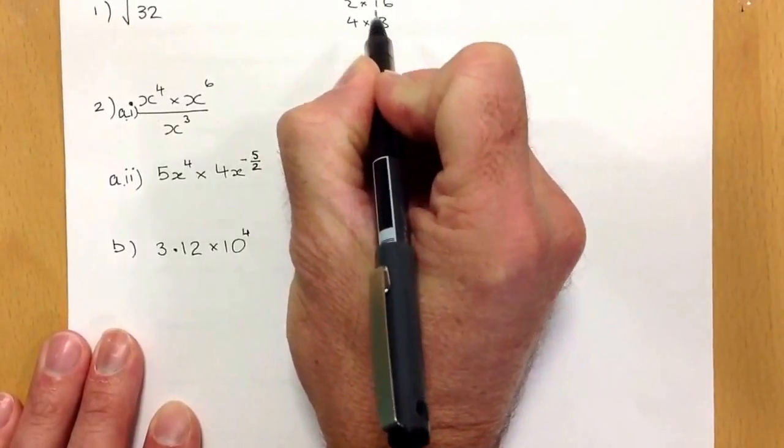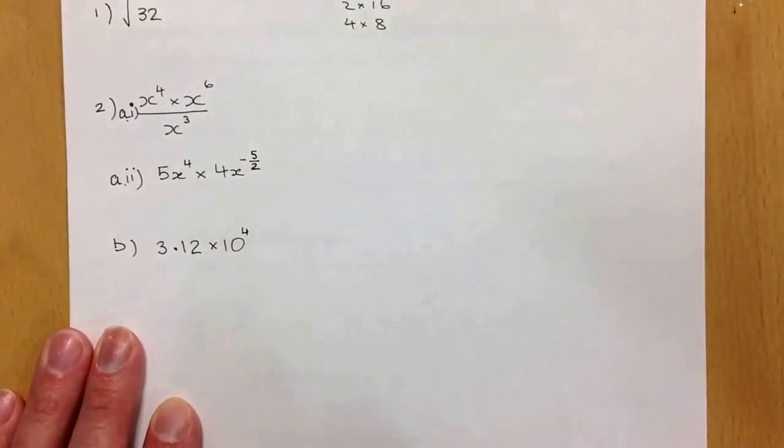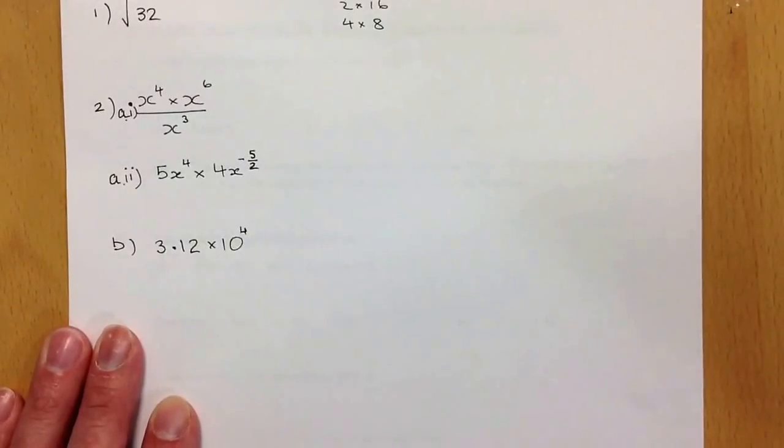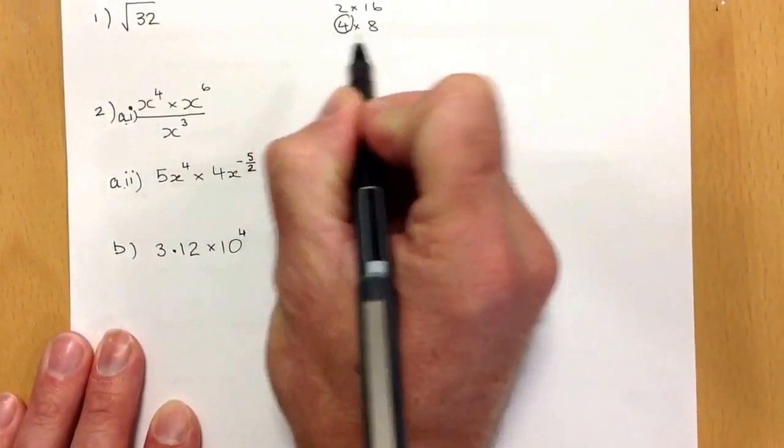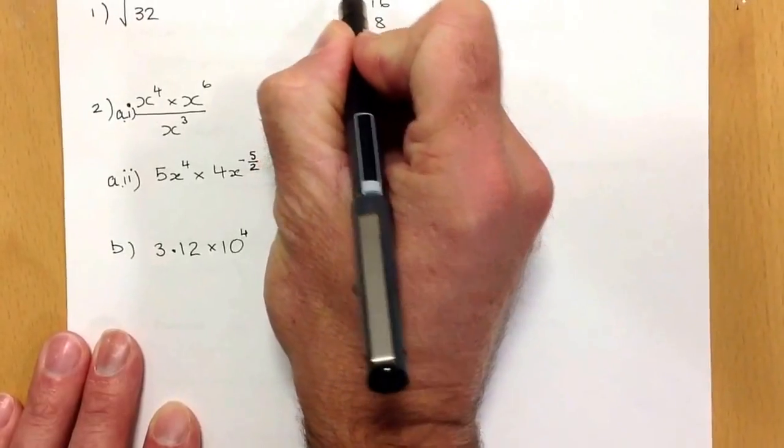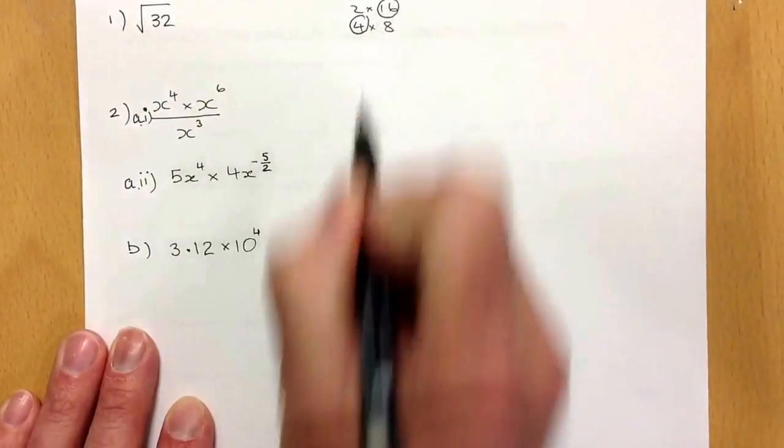4 times 8 would give me 32, and that looks like all the factors I would be using. I'm looking for square numbers in here. There's a square number there, there's a square number there, there's a square number there.